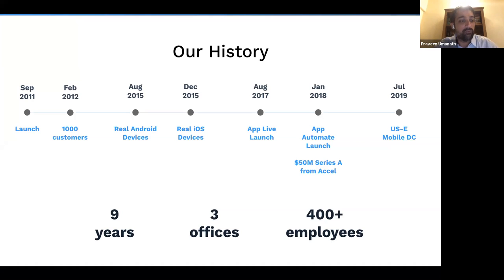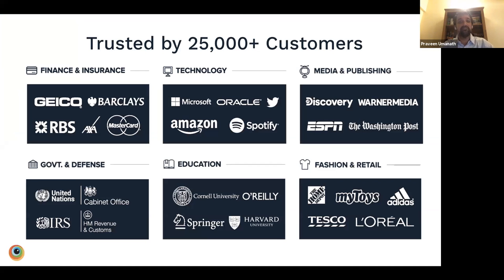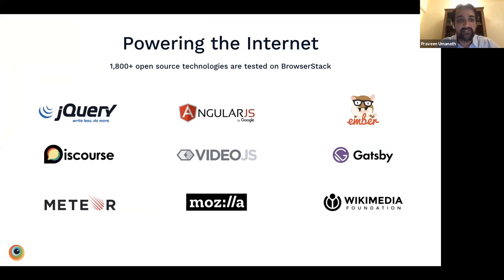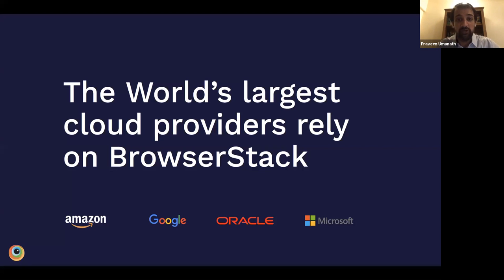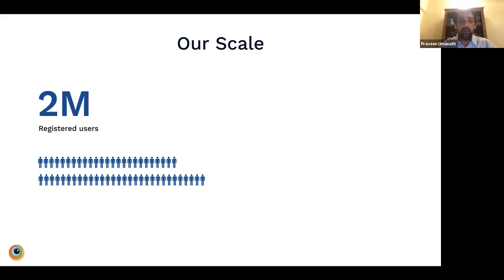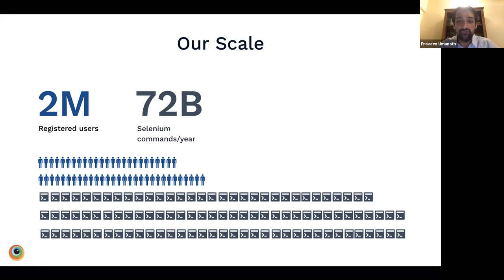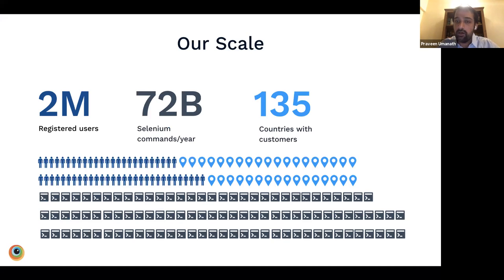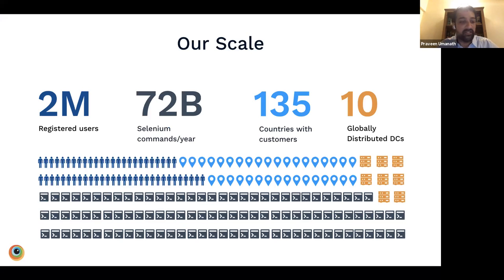Within six months, they had a thousand paying customers. Now, nine years later, we have three offices, 400-plus employees, and a platform with 2,000-plus browsers and devices, and 25,000-plus customers across sectors from finance, insurance, and technology. We also power some of the leading open source projects on the internet — jQuery, Angular, Ember — and some of the largest cloud providers. We have two million-plus registered users, 72 billion Selenium commands run on our platform every year, customers in over 135 countries, and 10 globally distributed data centers.